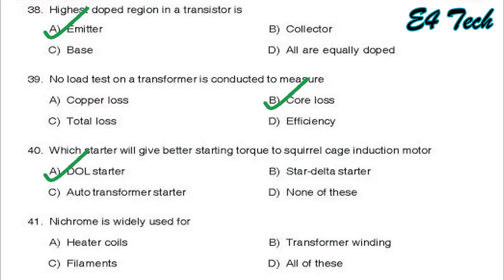Next, nichrome is widely used for heater coils, transformer winding, filaments, all of these. Nichrome is used in heating coils. That is option A, heater coils.